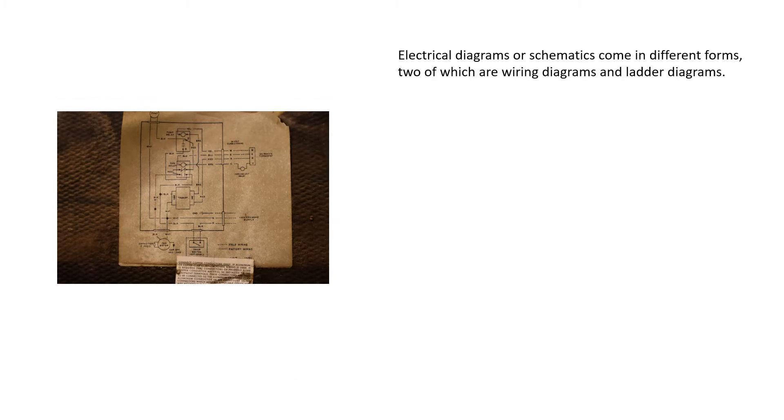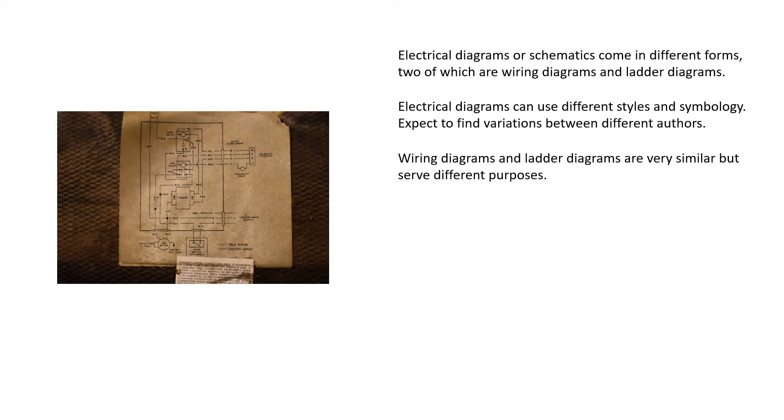Electrical diagrams or schematics come in different forms, two of which are wiring diagrams and ladder diagrams. Electrical diagrams can use different styles and symbology. Expect to find variations between different authors. Wiring diagrams and ladder diagrams are very similar, but serve different purposes.